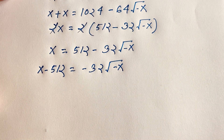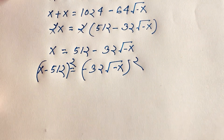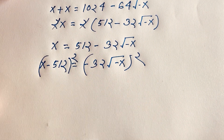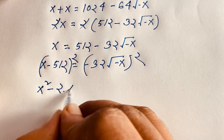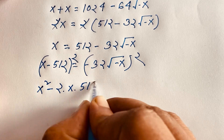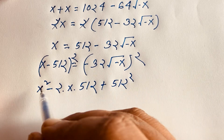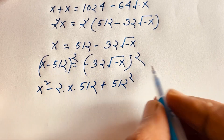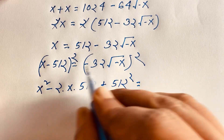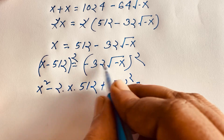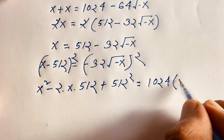Then I use both sides whole square again. Using (a minus b) whole square equals a squared minus 2ab plus b squared, where a is x and b is 512: we get x squared minus 2 times 512 times x plus 512 squared. On the right side, the square root is cancelled, but since the power is an even number it is always positive, so 32 squared is 1024, giving us 1024 times negative x.